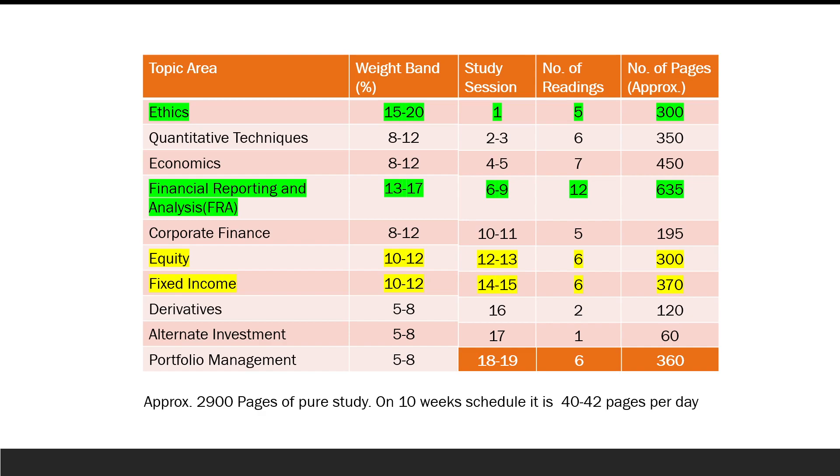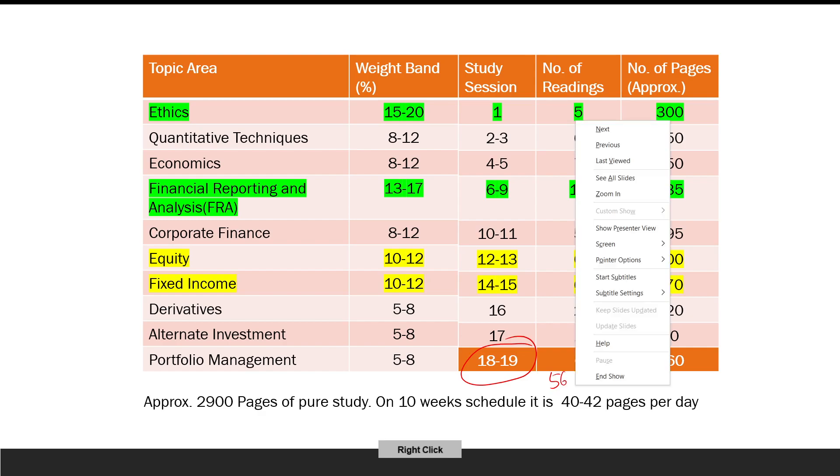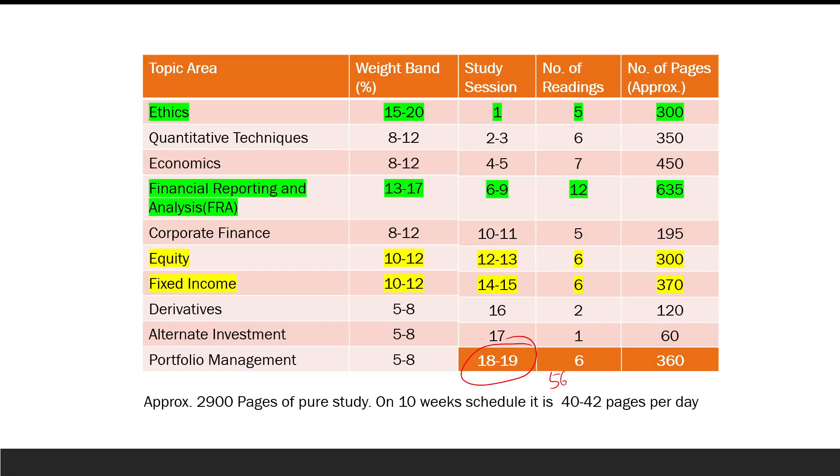Let's point to the specifics. All put together, there are about 19 study sessions and about 56 or 57 readings. And all put together, if you are following the CFA core curriculum book, there will be close to 3000 pages to be covered. Now these 3000 pages are the solid study material, which means that I'm excluding the concept checkers that are there at the end of each chapter or reading as well as the summary notes. If you go through each of these readings on average, each reading is about 60 pages.